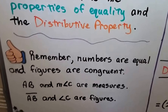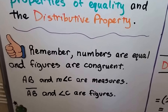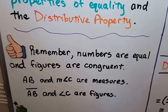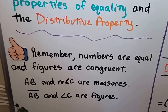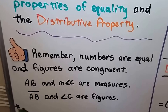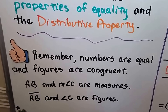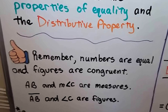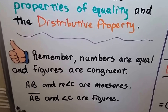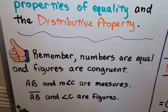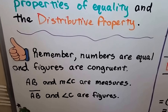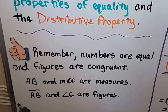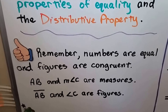I want you to remember that numbers are equal, and figures are congruent. So if we have point A and point B — AB — and the measure of angle C, those are measures. If we've got a segment AB and angle C, those are figures, and those would be congruent. We'll talk about that more in a minute.